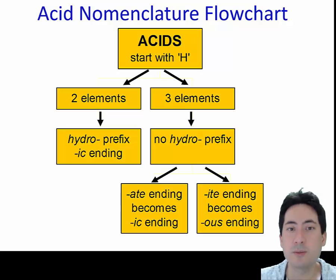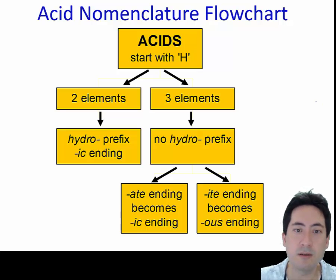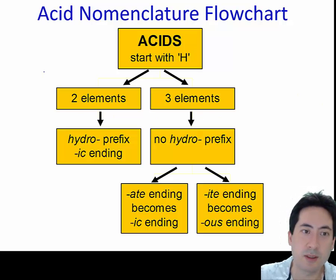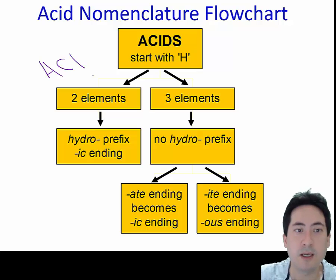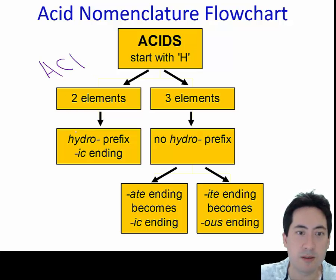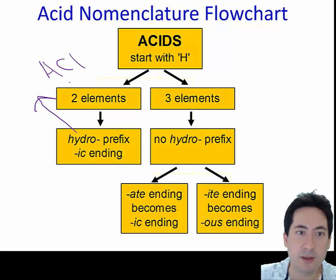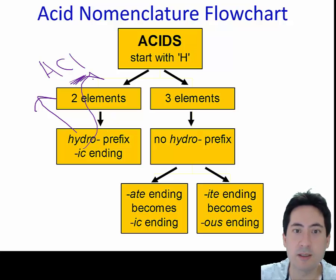Just a little bit of nomenclature now. If you have something like HCl, there are only two elements. So you start with 'hydro', add the chlorine, and the '-ic' at the end — so that's hydrochloric acid.